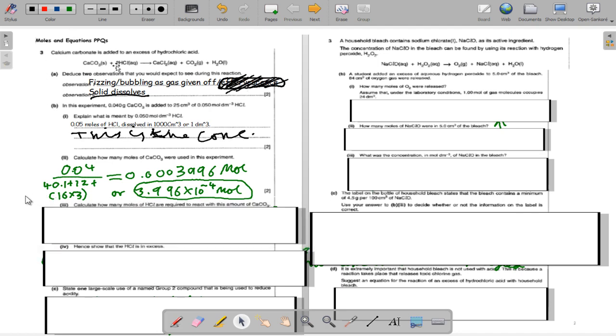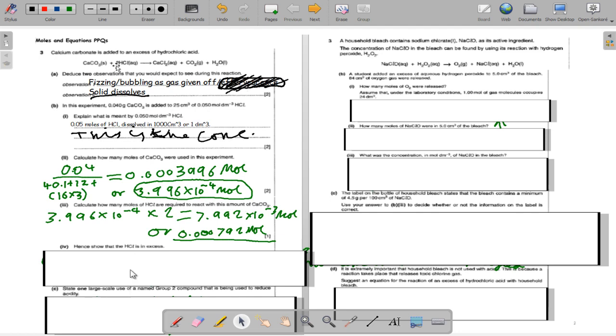Part 3, moles of HCl: 3.996 times 10 to the minus 4 times 2 is 7.992 times 10 to the minus 3 moles, or 0.000792 moles.